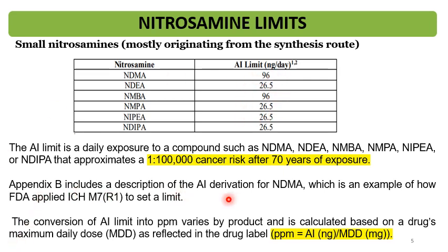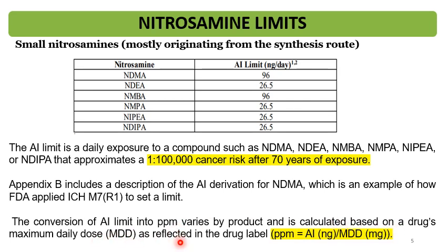Appendix B includes the description of AI derivation of NDMA, which is an example of how the FDA applied ICH M7 to set these limits. If you review the US FDA guideline, you can find these calculations. The conversion of AI limit into PPM varies by product and is calculated based on the drug's maximum daily dose (MDD) as reflected in the drug label: PPM = AI (in nanogram) ÷ MDD (in mg).